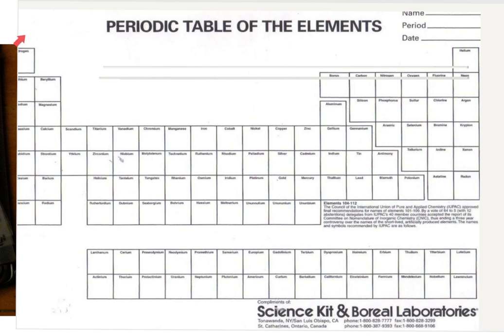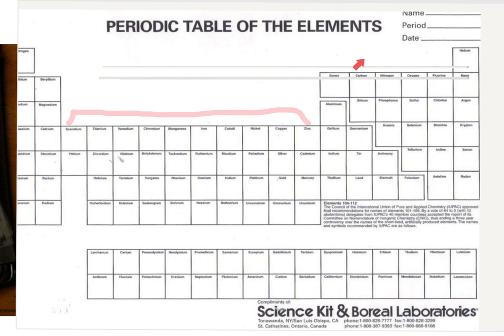Right above group one, write a plus one. Right above group two, write a plus two. For the transition metals area, box those off and write plus one, plus two, plus three. Then continuing across: plus three, plus or minus four, negative three, negative two, negative one, zero. Make sure you have those ion charges written in and highlighted.